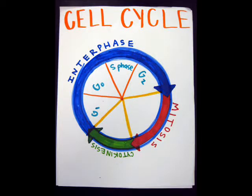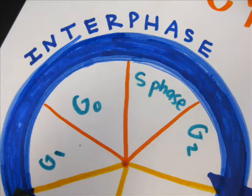The cell cycle is broken down into three stages. The first stage of the cell cycle is called the interphase. In the interphase, there are three main checkpoints: G1, G0, S, and G2.